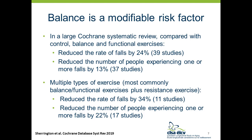Not only is balance a critical risk factor for falls, but it's also a modifiable risk factor. In a rigorously conducted Cochrane systematic review, there was high certainty evidence that balance and functional exercises reduced the rate of falls by 24% and reduced the number of people experiencing one or more falls by 13%. Moreover, there was moderate certainty evidence that multi-component exercise programs — including balance, functional exercises, and resistance training — reduced the rate of falls by up to 34% and the number of people experiencing falls by 22%. This is compelling data that balance assessment and treatment should be part of fall risk prevention guidelines.